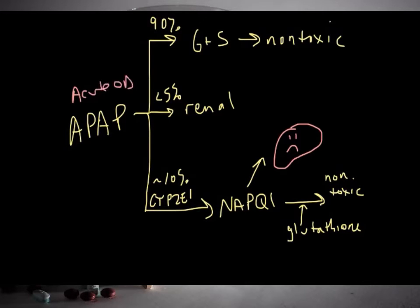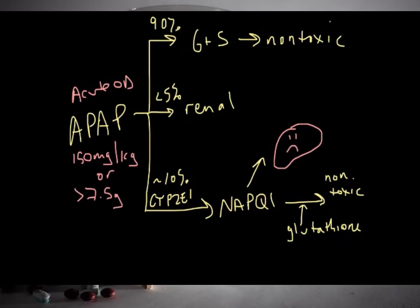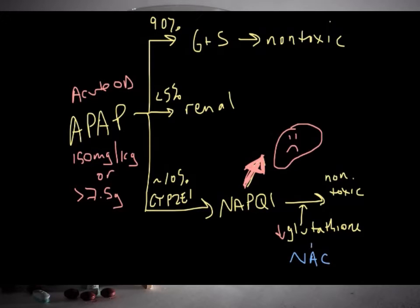But in a situation where the body has taken in a very large dose of acetaminophen — at doses above 150 mg per kg, or around 7.5 g — the body's glutathione supply becomes depleted, resulting in an increased availability of NAPQI, which, as you might imagine, is not good for the liver.